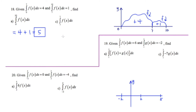Part C: immediately I see the property where we're finding the area under a curve beginning at 7 and ending at 7. This implies there's no width to our region, which means the overall area is going to be 0.